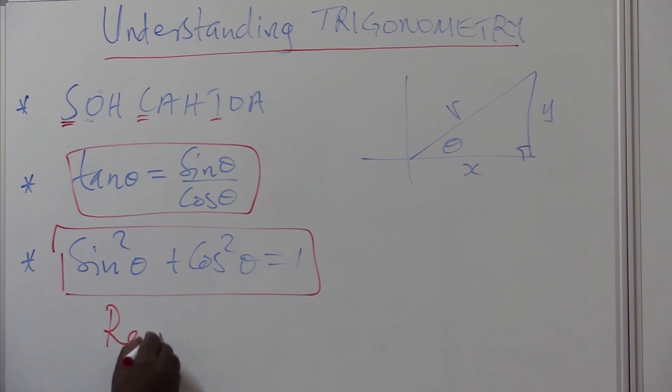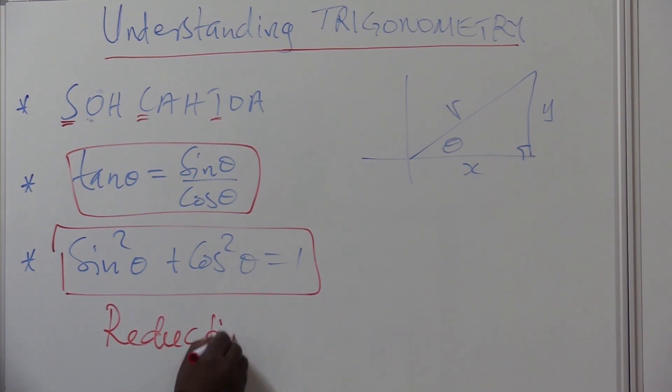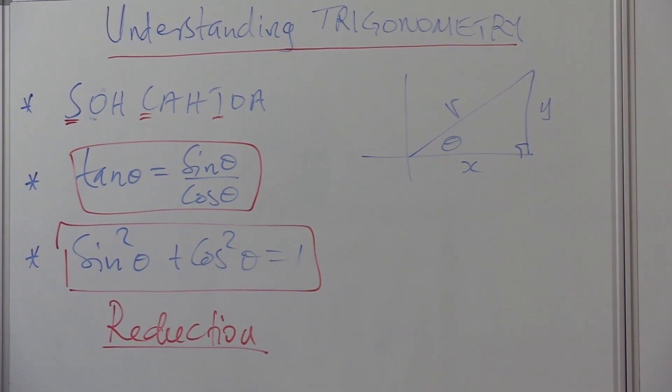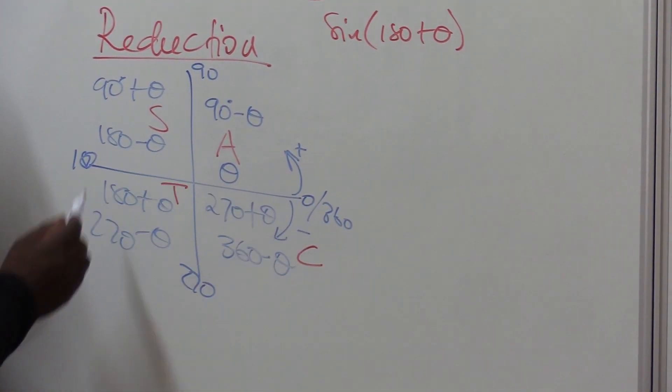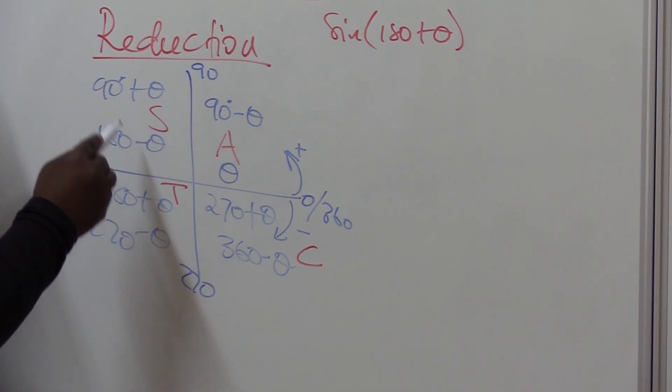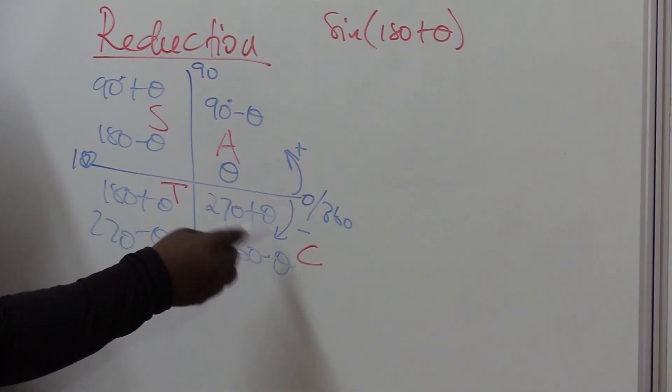What do we do when we deal with this section called the reduction formula? How do we reduce big angles into small angles? All ratios are positive in the first quadrant, only sin and its reciprocal is positive in the second quadrant, only tan here, only cos here.